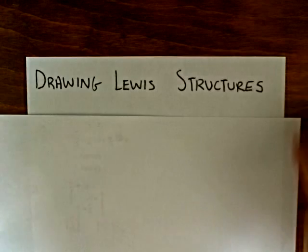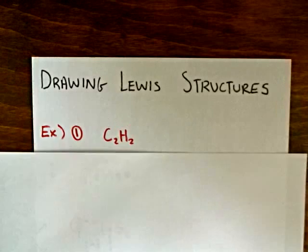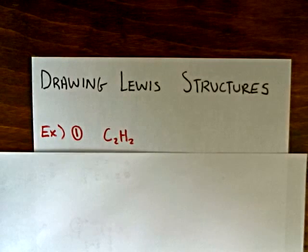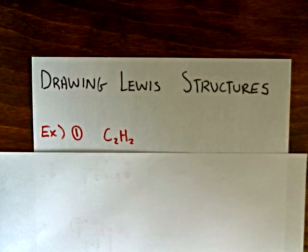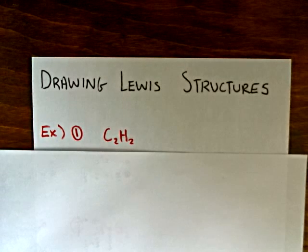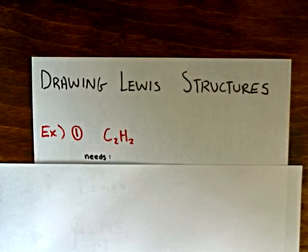Let's look at an example. This is a pretty basic molecule. In order to do these Lewis calculations, the first thing I do is start off by determining the number of electrons that the species needs — the number of electrons that each atom needs in order to obtain a stable octet or stable duet.